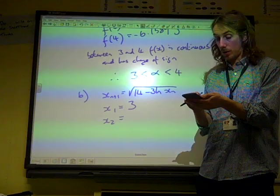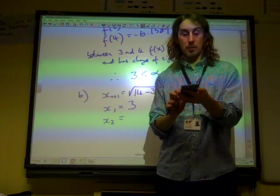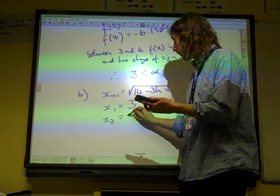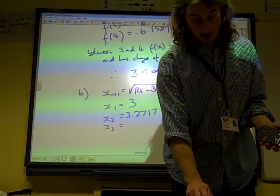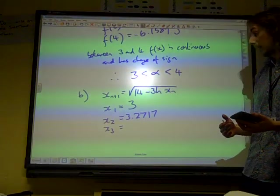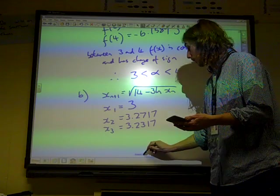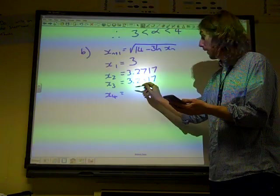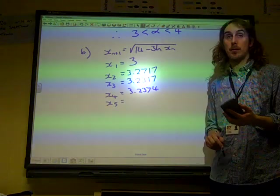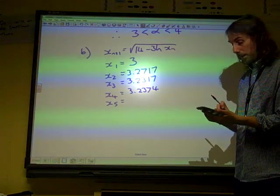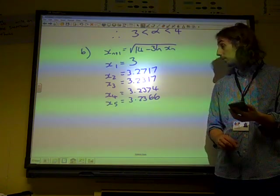We're going to start at 3. Remember, in the calculator we can do this by typing in 3 and pressing equals. And then we're going to type in the square root of 14 minus 3 ln ans, close the bracket. That gives me 3.2717. I'm supposed to be doing this to two decimal places, so I'm going to work through my answers to at least three, but I'll do it to four. I then get 3.2317. The next one is 3.2374.